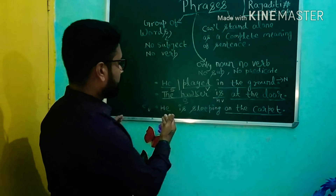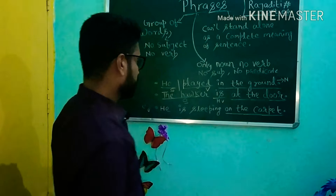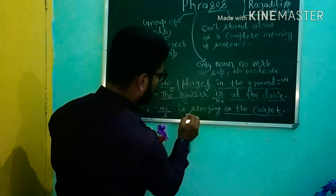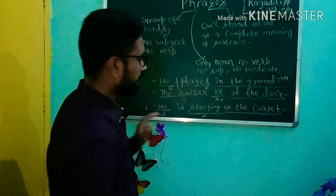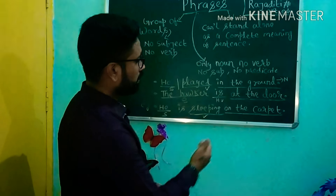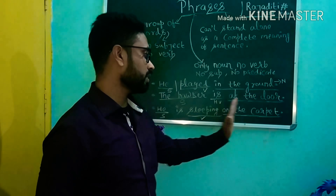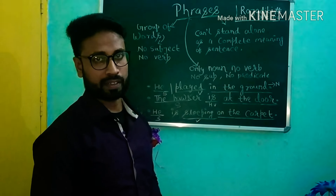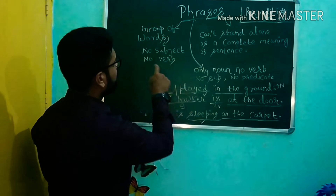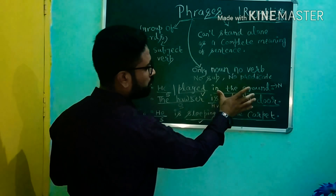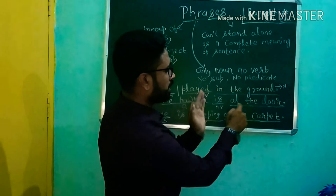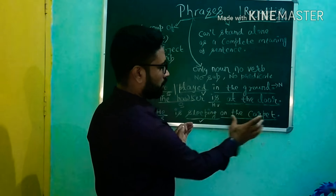Another example: 'He is sleeping on the carpet.' Here, 'he' is the subject, 'sleeping' is the verb, and if we separate the subject and verb from this sentence, 'on the carpet' will not have any meaning. So it is now very clear through these examples that 'in the ground,' 'at the door,' and 'on the carpet' all have no subject and no verb.